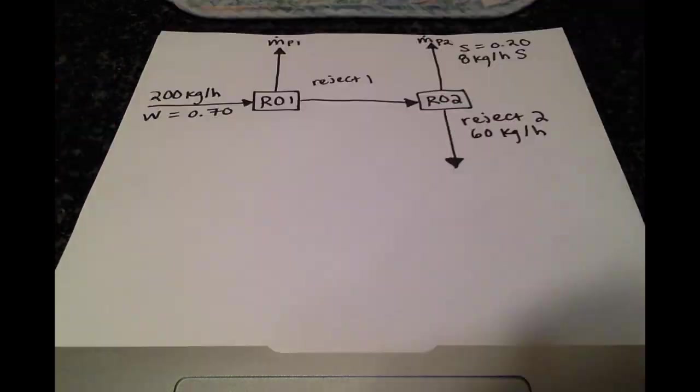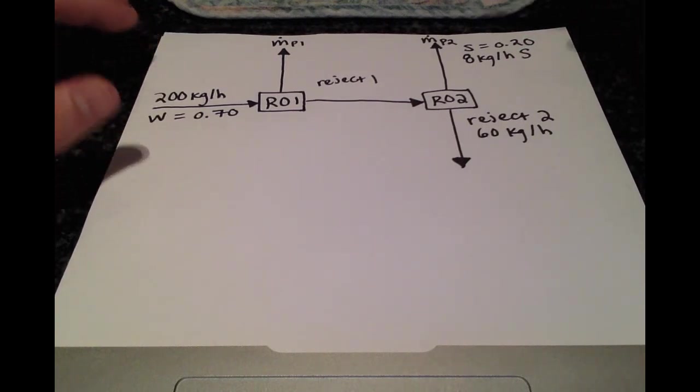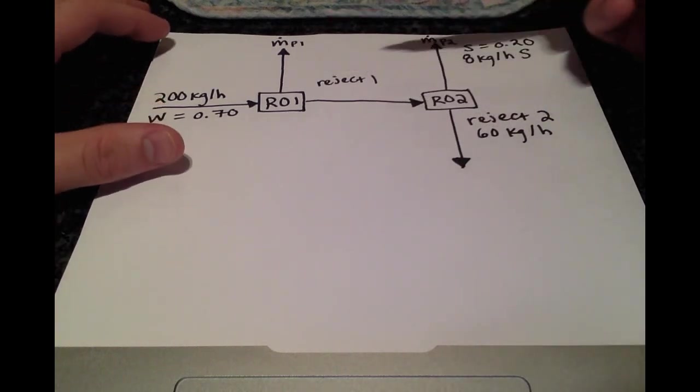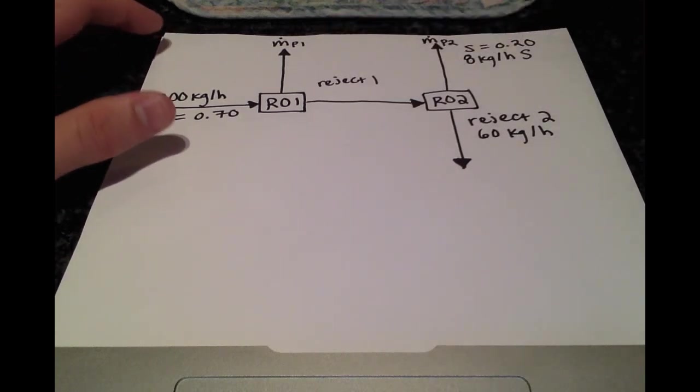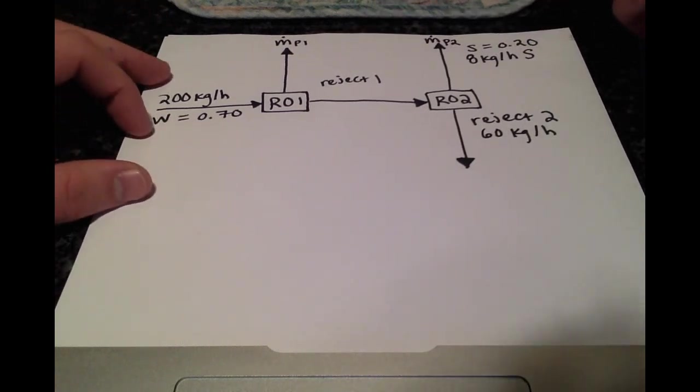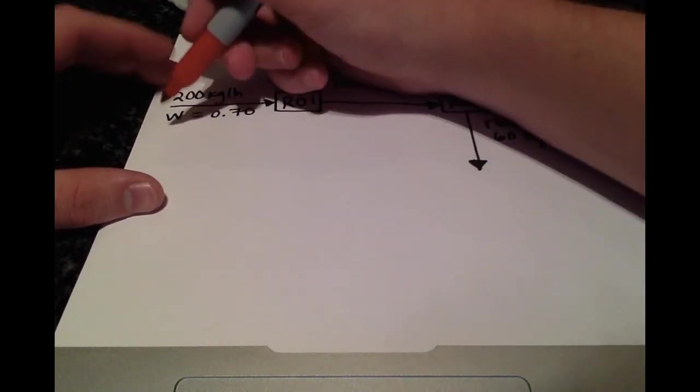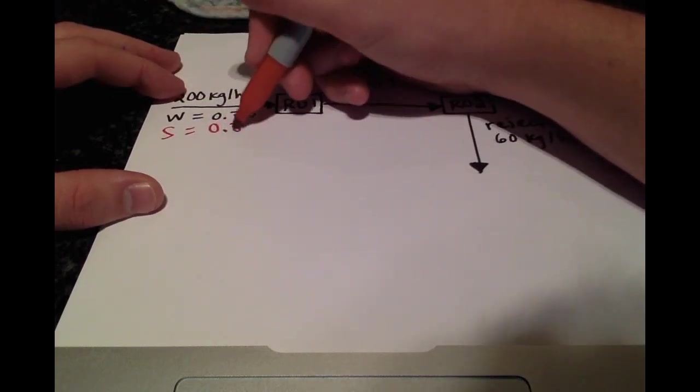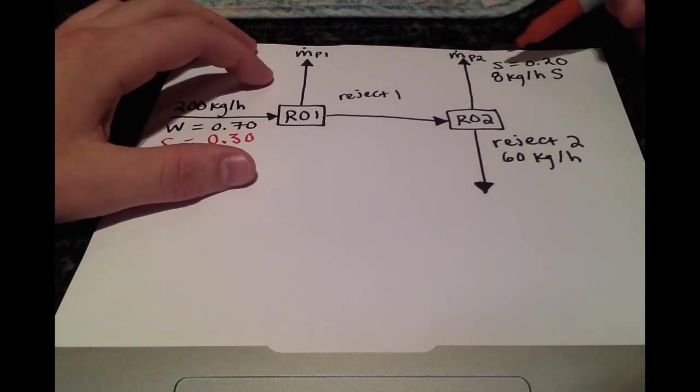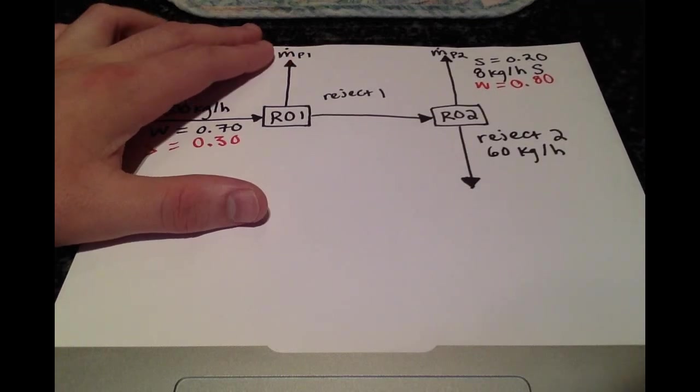I filled in all the information given from the text, but now we'll begin solving. Right away when I looked at this, there's a couple things you can see. We're assuming that all streams will be salt and water. When we know that the water in the feed is 70% by mass, we also know that the salt content must be 30% by mass because those are the only two components. Similarly, if salt is 20% by mass, then the water must be 80% by mass.